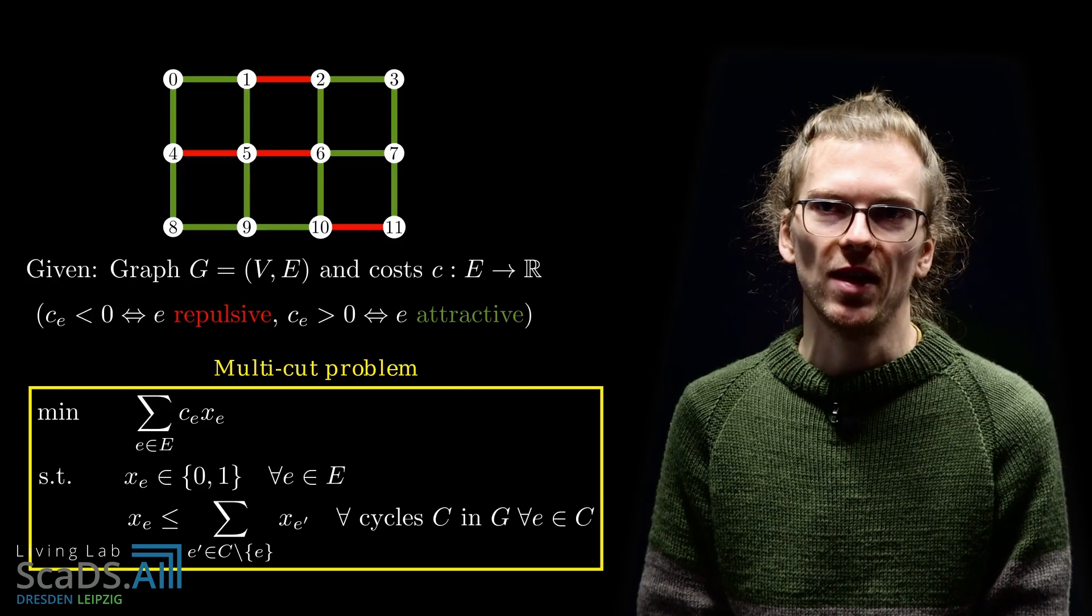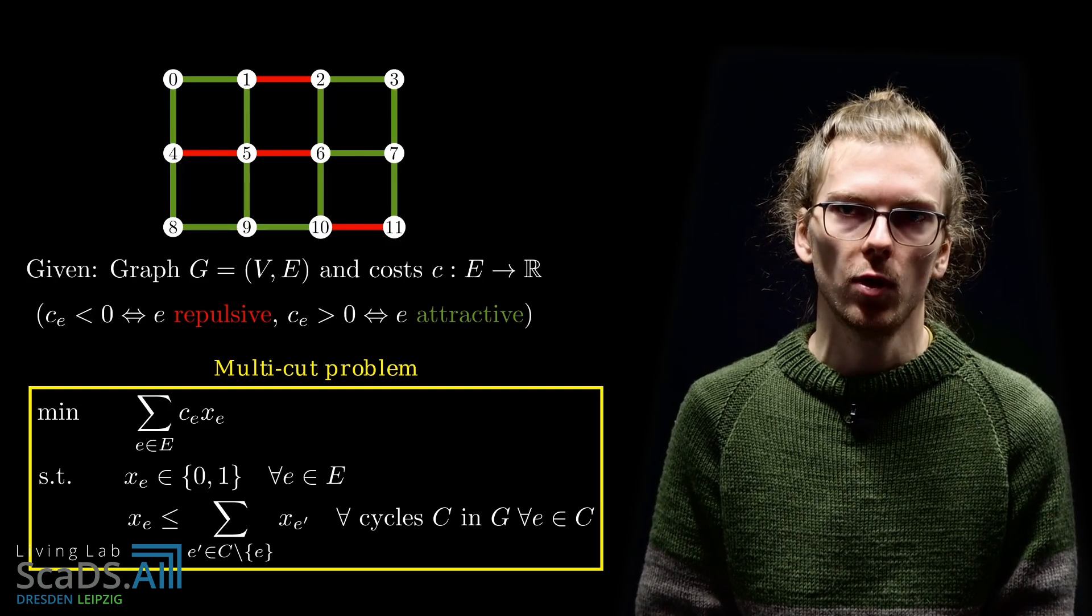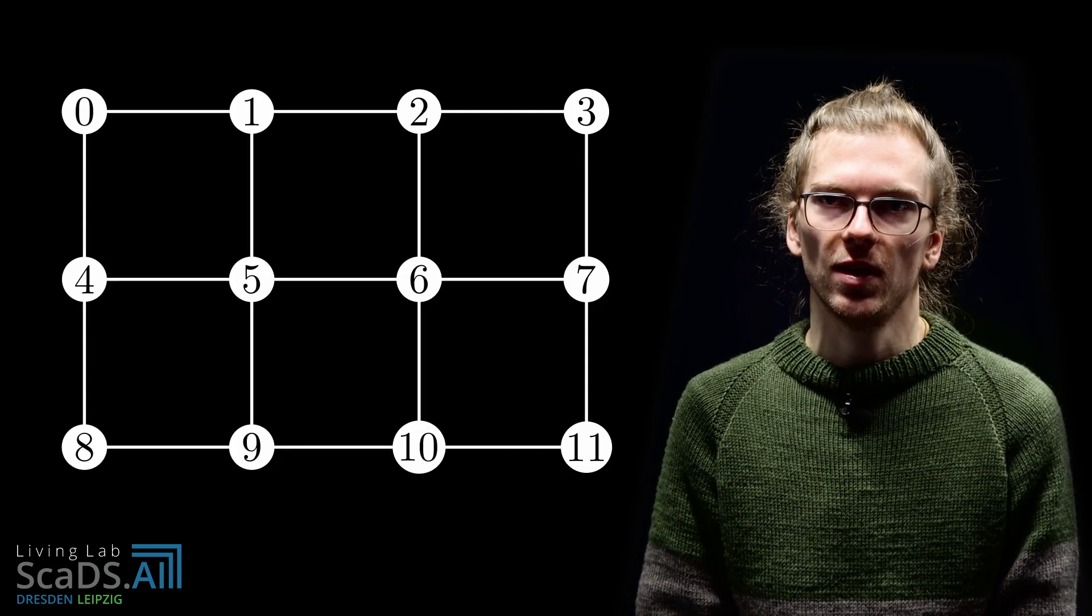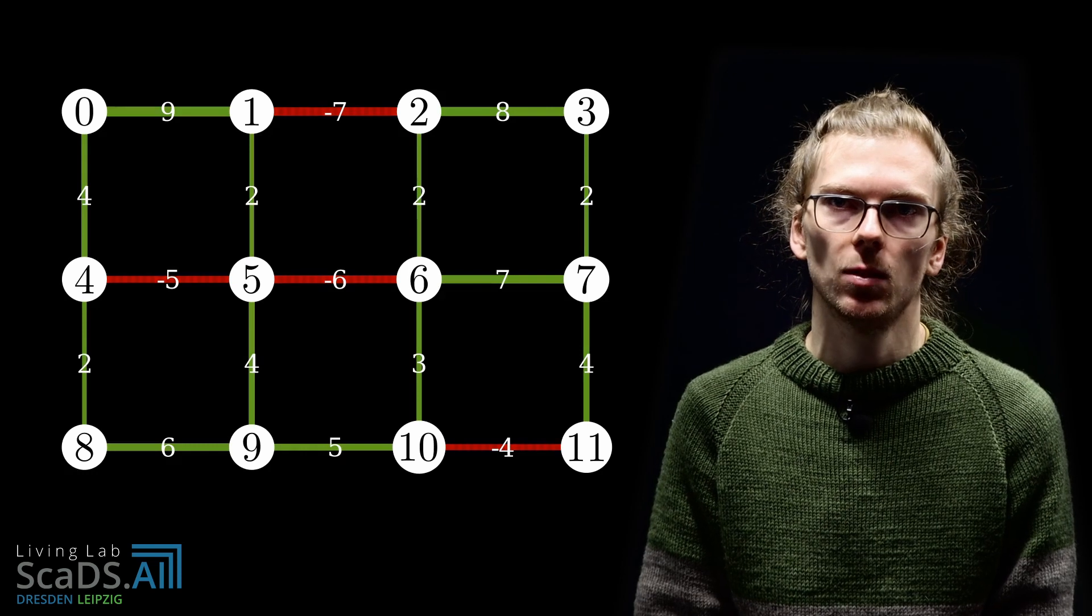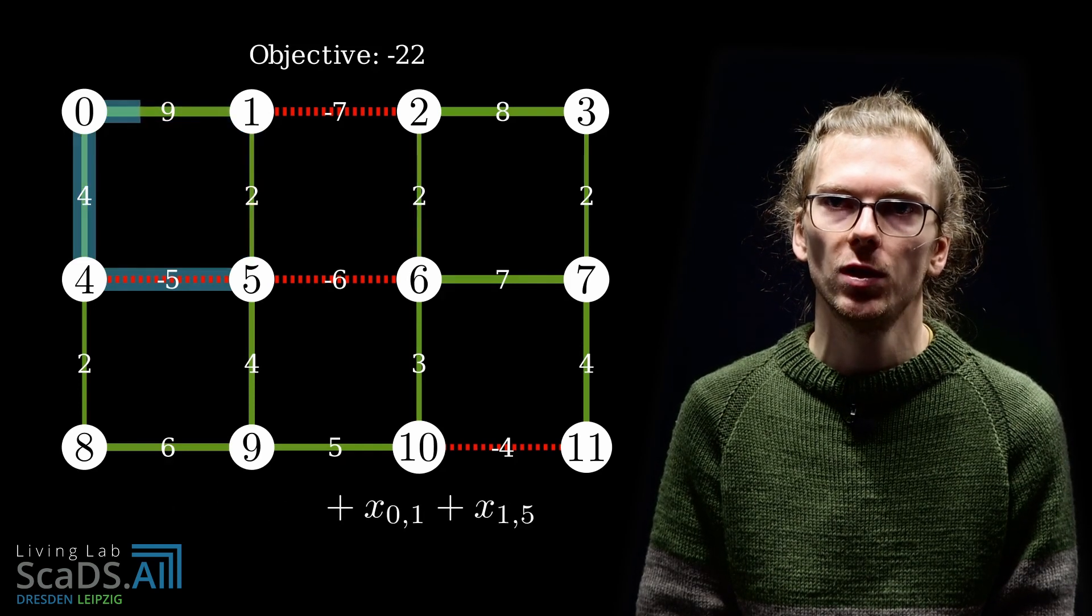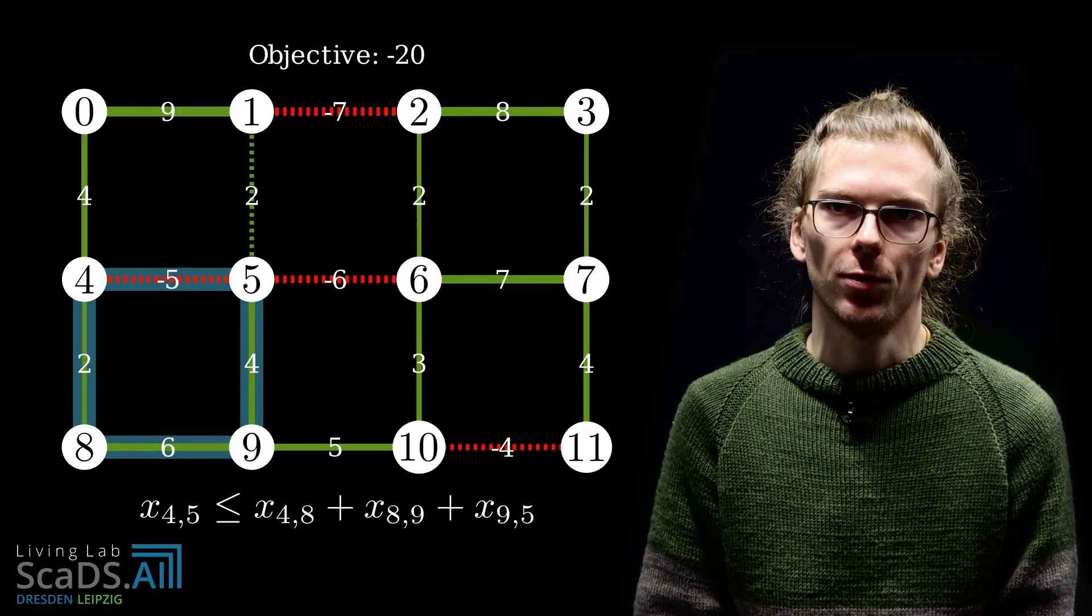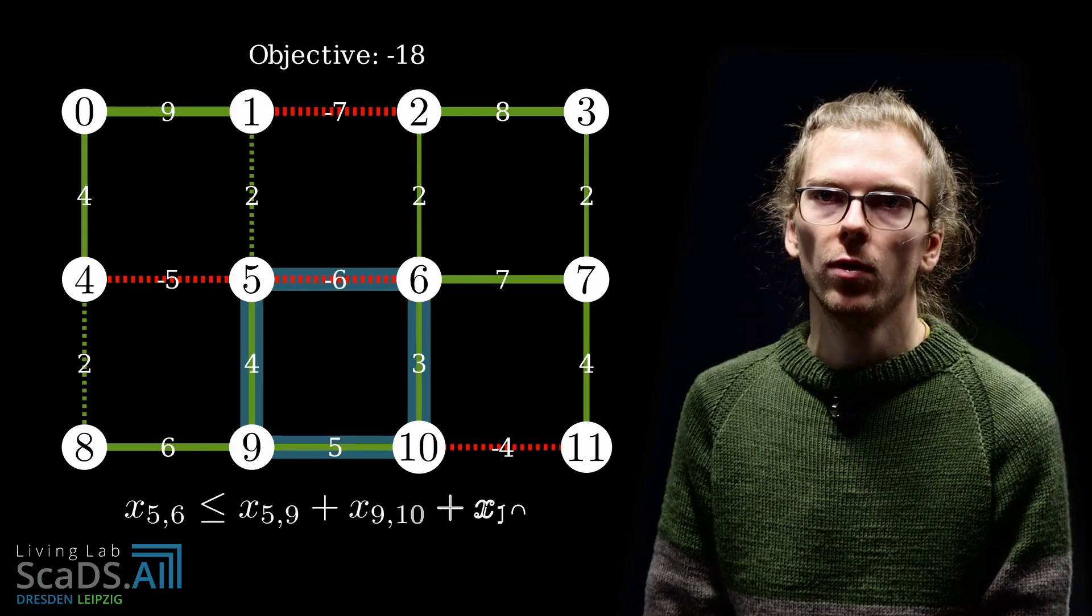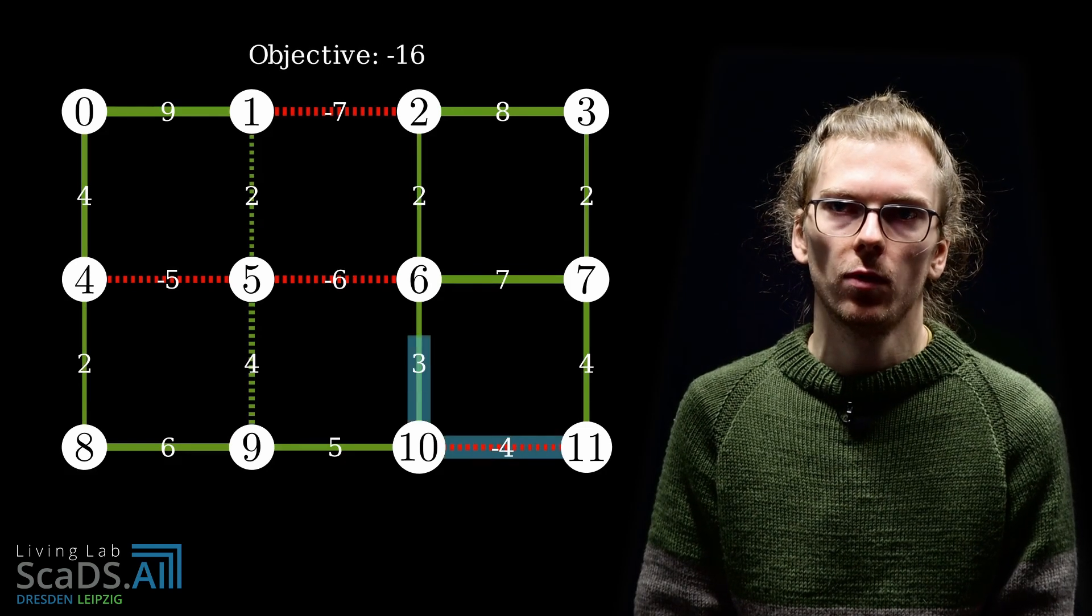Let's have a closer look at this example. As a reminder, a negative cost means that the edge wants to be cut, while a positive cost means that the edge does not want to be cut. A general purpose solver essentially works as follows. It proposes a solution without respecting the cycle inequalities, like the one seen here. Then it checks if there is a violated cycle inequality, like this one, and proposes a new solution that does satisfy the cycle inequality. Then a new violated cycle inequality is searched and added to the model. This is done iteratively until eventually a solution is found that does not violate any more cycle inequalities.